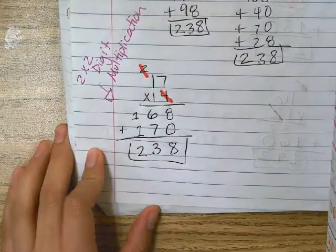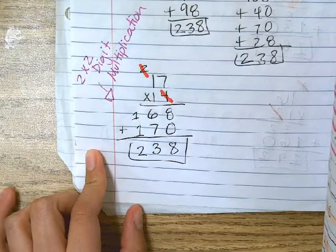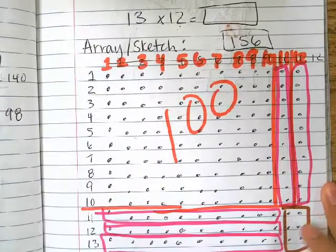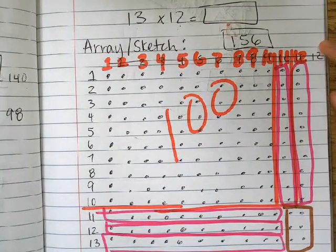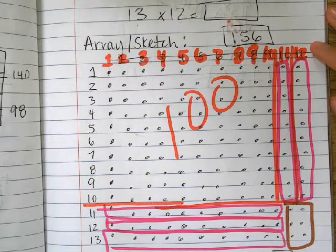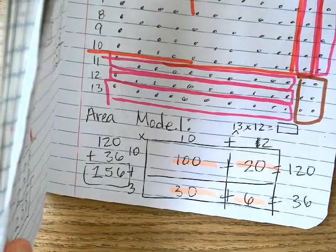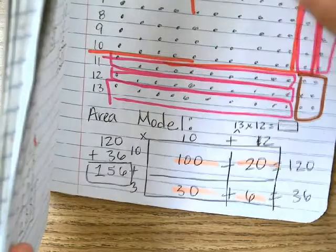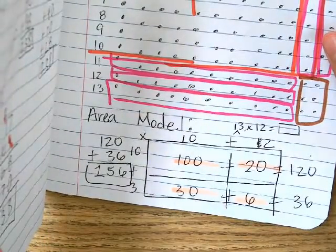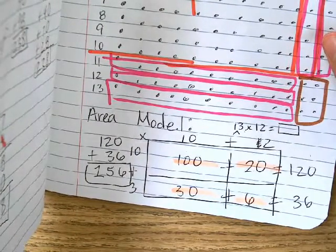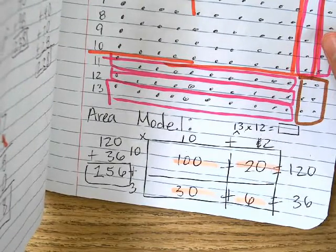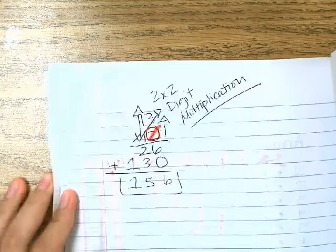And then we have the traditional 2-by-2 digit multiplication, and we got that same answer. Over here, we did a sketch of another one — 13 by 12 — showing the array and sketch method. Then we have our area model, breaking up 13 and 12. Make sure we always include that 10 or that 20 so it won't be too difficult to multiply. And then we did the normal format for multiplication as well.